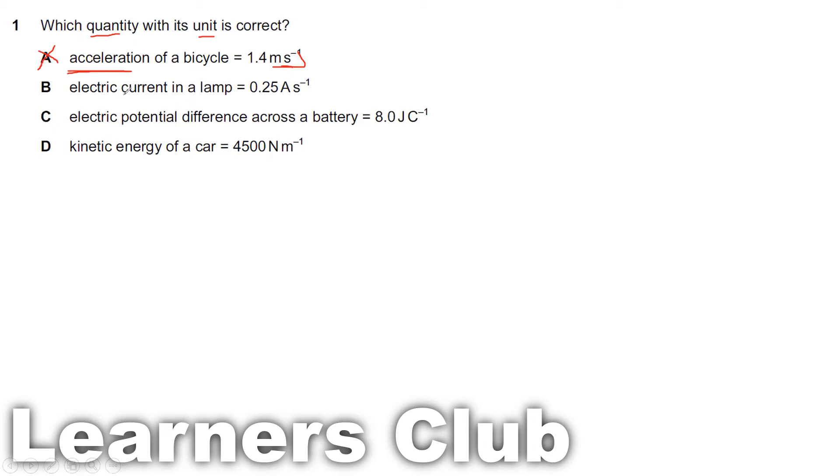Electric current. Current's unit is ampere but they are saying ampere per second. So this is incorrect.